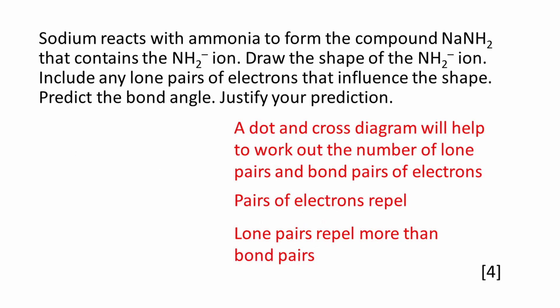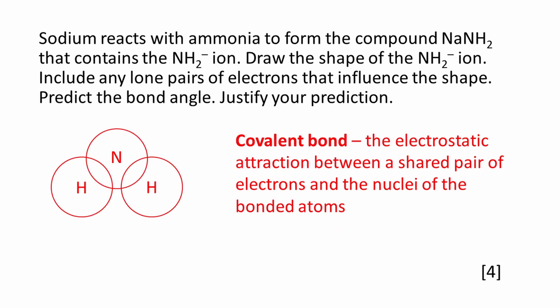Here's the question. A dot and cross diagram will help to work out the number of lone pairs and bond pairs of electrons. Start by drawing each atom with a circle around it. The circle represents the outer electron shell of each atom. A covalent bond is shown where the circles overlap. A covalent bond is the electrostatic attraction between a shared pair of electrons and the nuclei of the bonded atoms. The dot and cross in the overlaps between the nitrogen and hydrogen atoms represents a covalent bond.